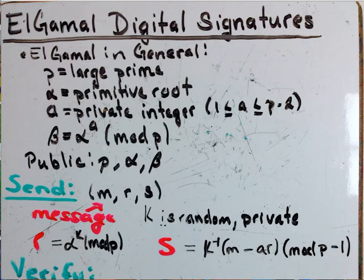In this video I'm going to talk about ElGamal digital signatures. For ElGamal in general, P is a large prime, and alpha is a primitive root.